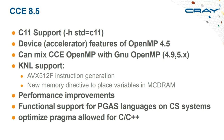CCE 8.5 brought C11 support. Device features were added for OpenMP 4.5, though not relevant for Archer since there are no GPUs. The OpenMP implementation changed to be compatible with GNU, enabling you to mix GNU-compiled objects with CCE-compiled objects using the same OpenMP implementation — an important interoperability improvement. KNL support was added at this point, including support for AVX-512 instructions.